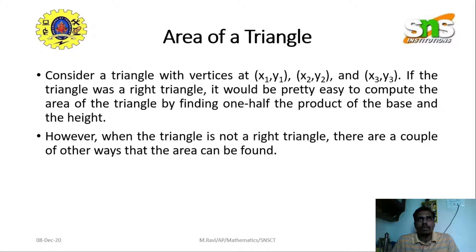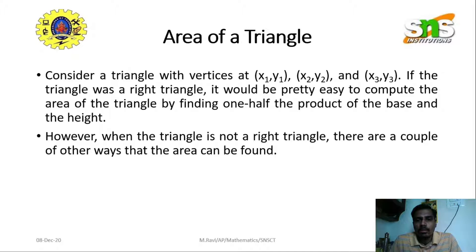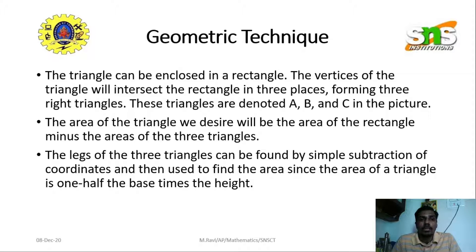Let's start from the basics: the area of a triangle. The area of a triangle is one-half times base times height. If three vertices of a triangle are given, we can find the area. For a right-angle triangle it is easy to compute, but not all triangles are right-angled. One approach is to enclose the triangle in a rectangle — a geometric technique — where the vertices of the triangle intersect the rectangle in three places.